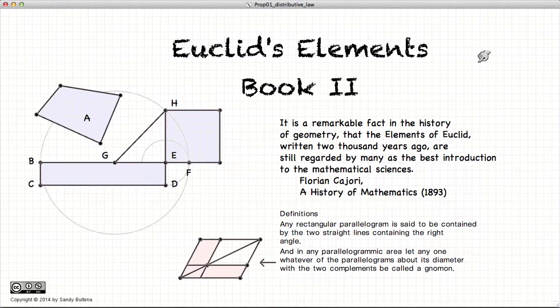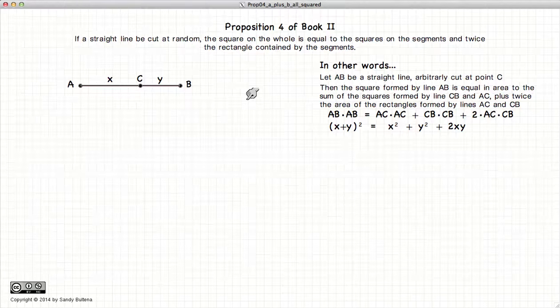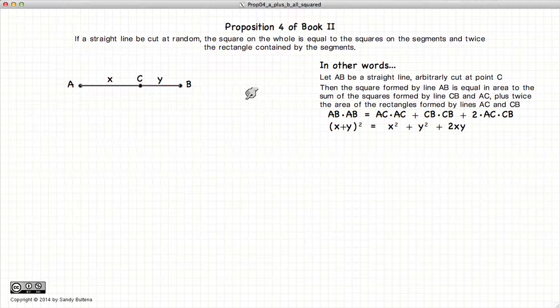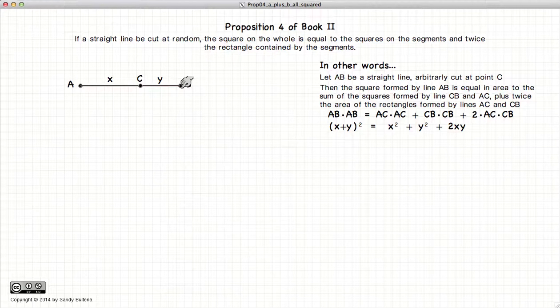Hi, and welcome to my tutorials on Euclid's Elements Book 2. This video presentation covers Proposition 4, which states that if we have a line segment, the square on the whole is equal to the square on the segments plus twice the rectangle formed by them.